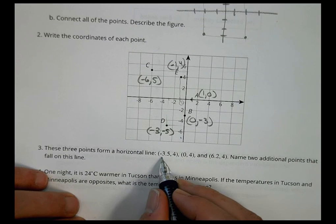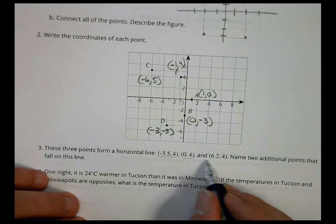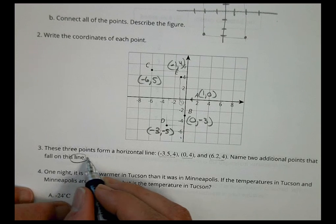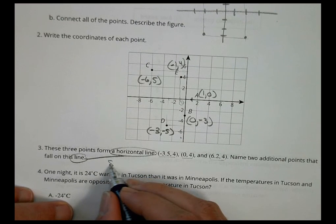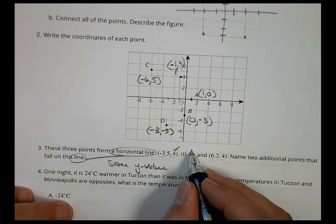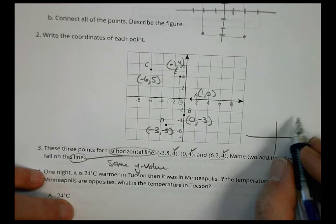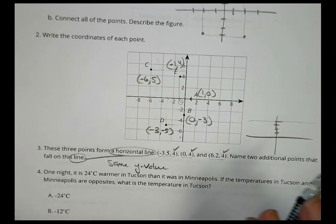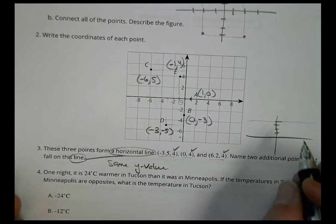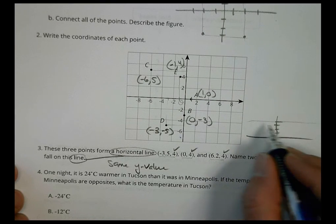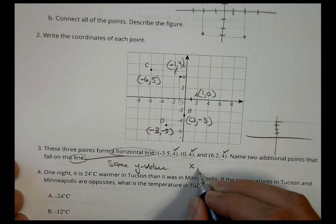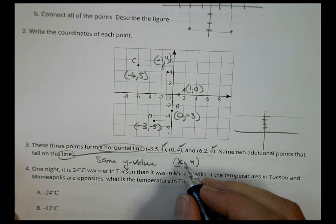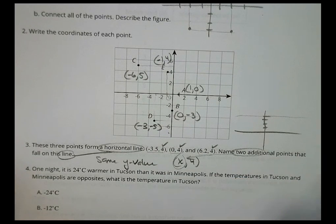Number 3. These three points form a horizontal line: negative 3.5, 4; 0, 4; and 6.2, 4. Name two additional points that fall on this line. So while it's on a horizontal line, what makes it a horizontal line is they have the same y-value: 4, 4, 4. So if you were to plot it like this, 1, 2, 3, 4, we're looking for anything that goes right along there. That's the idea. So that becomes our 4 y-value. So any point is going to be any x-value, and as long as the y-value is 4, you're going to have a point that is on that line. So you just want to pick two additional points instead of the letter x.